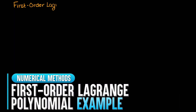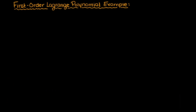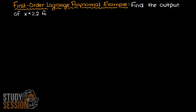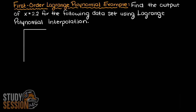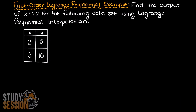In our last video we talked about what Lagrange polynomials are and how we can use them to interpolate data. In this video we are going to go through a first order Lagrange polynomial interpolation example so that you can see how we solve one of these problems. We are asked to estimate the output of the following dataset using Lagrange polynomial interpolation.